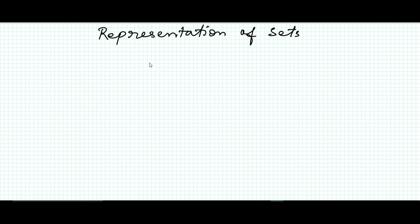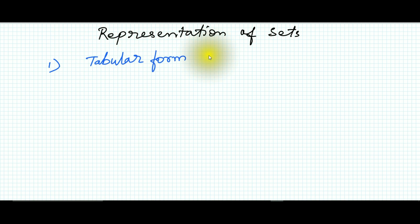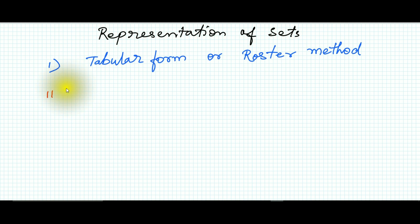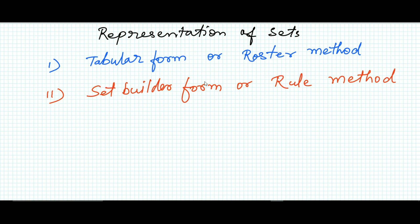A set can be represented in two ways. The first one is called the roster method or tabular form, and the second one is called the set-builder form or rule method.